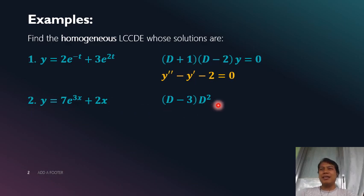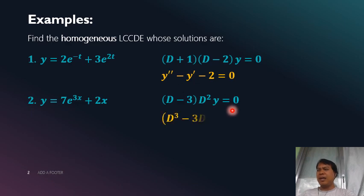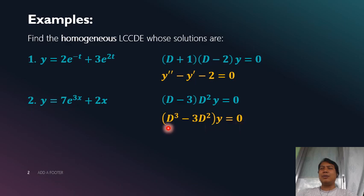So we have D²(D - 3)y = 0. We can distribute this term to obtain D³ - 3D² y = 0. This is now our differential equation — a third order DE.